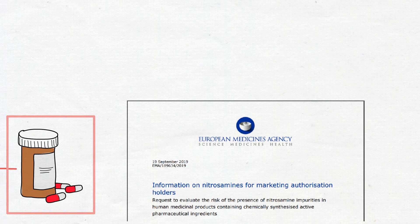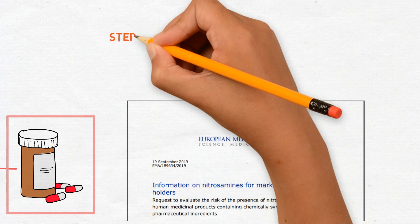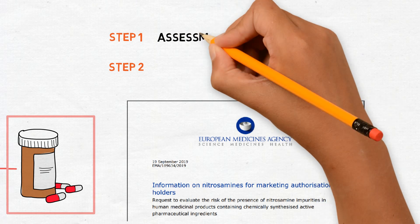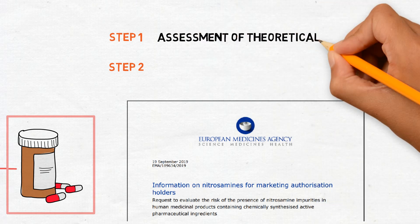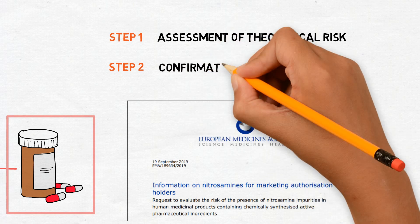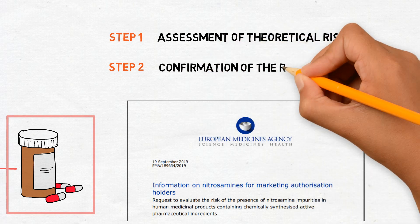In September 2019, EMA determined that all pharmaceutical companies must perform an evaluation in two steps. Step 1 is an assessment of the theoretical risk in the drug and Step 2 is the confirmation of the risk when identified using analytical methods.